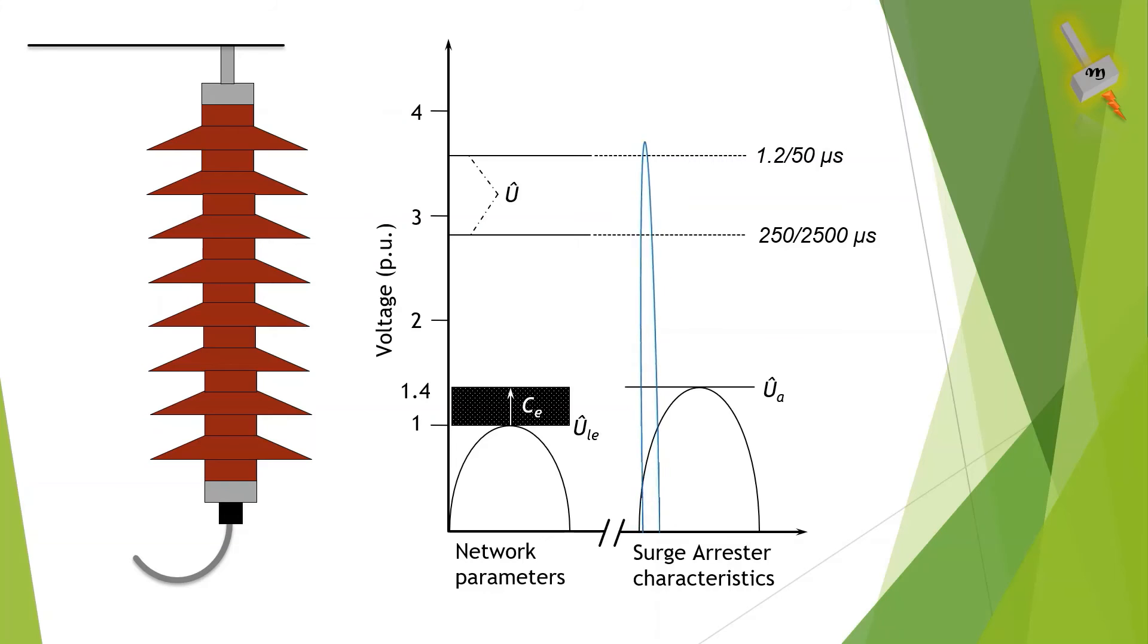Now let's say a surge event like a lightning strike occurs in the system. The lightning arrester senses the voltage subsequently the surge current gets diverted to the earth and the system voltage returns to normal.